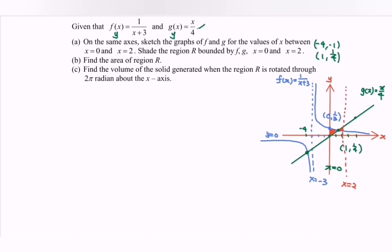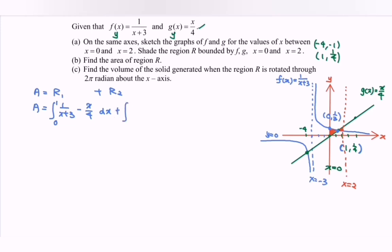There are two sub-regions. For region 1 (from x = 0 to x = 1), the blue line f(x) is above the green line g(x), so we integrate the highest minus the lowest: ∫[0 to 1] (1/(x+3) - x/4) dx. For region 2 (from x = 1 to x = 2), the green line is above the blue line: ∫[1 to 2] (x/4 - 1/(x+3)) dx.